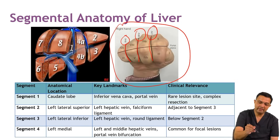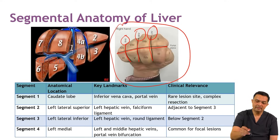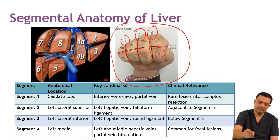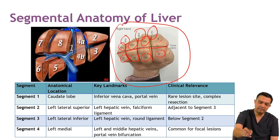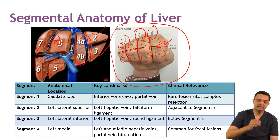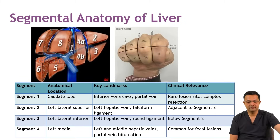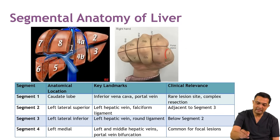The knuckles divide the liver into upper and lower parts. The segments are: Segment 3, Segment 4b, Segment 5, Segment 6, Segment 7, Segment 8, Segment 4a, and Segment 2. This is how you remember the various segments of the liver based on Couinaud's classification, and Segment 1 is the caudate lobe.